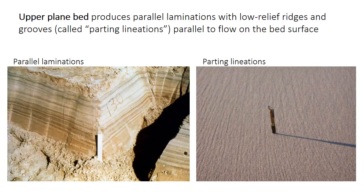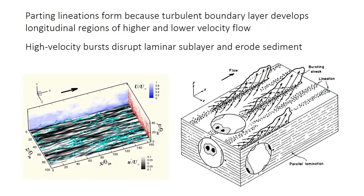Bedding can be planar with flat layering, but there's a special case of planar bedding called upper plane bed. This produces parallel laminations — you can see the thinly spaced horizontal layering in the left-hand photo, defined best by dark layers of heavy minerals. If you look at the surface of one of those layers, you would see faint ridges and grooves that run parallel to the flow direction along the surface of the bed; in the right-hand picture they're running vertically. These faint ridges and grooves are called parting lineations, and they are really important for distinguishing upper plane bed from regular plane bedding, which is called lower plane bed.